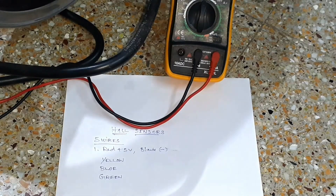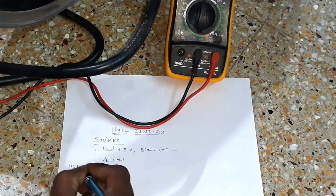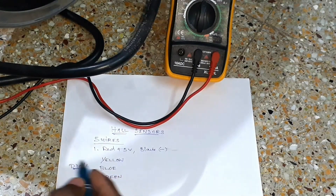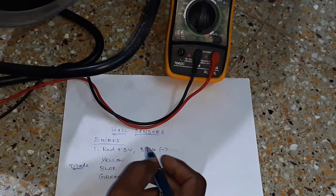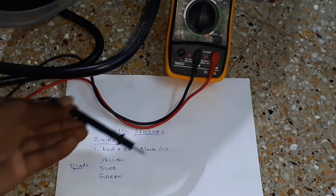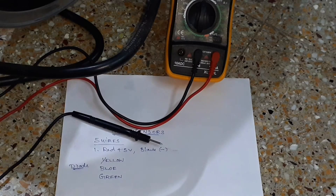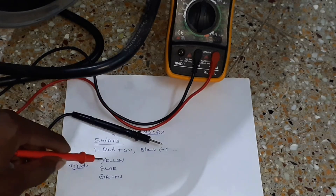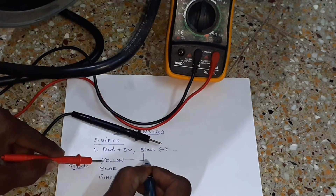I'm going to tell you about the first thing about the diode mode. If you look at the multimeter, you can see the black cable in the multimeter, and you can see the negative cable on the diode, and check the ohms.